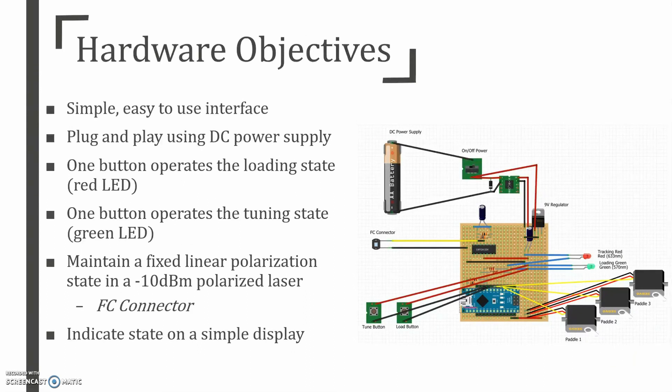For the hardware, the user interface needed to be simplistic, where a DC power supply can be connected, powering the device activated by a switch. It would need to incorporate two buttons with a coloured LED to indicate its current state. One button would operate the loading state and indicate red, the other would operate the tuning state and indicate green. An amplifier and photodiode needed to be designed to accommodate a negative 10 dBm laser using an FC type connector to measure optical power.